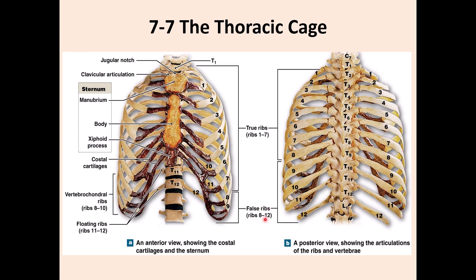Then there are the false ribs, which are ribs 8 to 12. False ribs are divided into two different types. One is called vertebrochondral ribs — ribs 8 to 10 — they fuse and share only one cartilage. They do not have individual cartilage; that single cartilage goes and attaches to the sternum. So these are called vertebrochondral, and they are part of the false ribs.